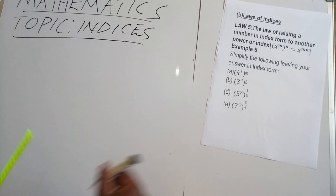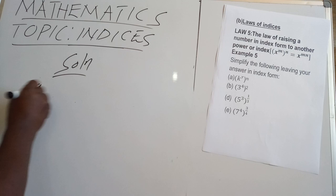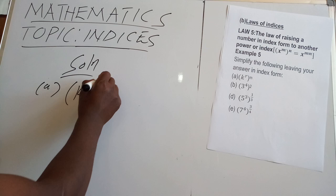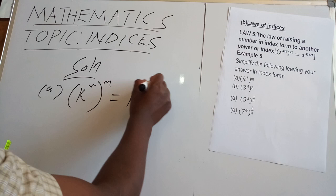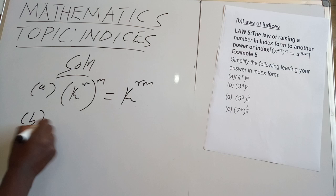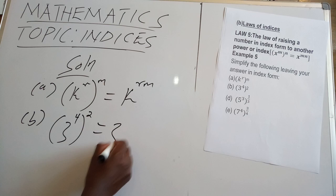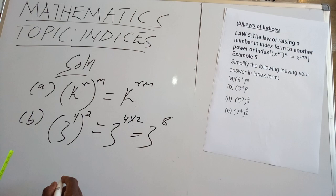Now we go to example number 5. Part A: when you have k raised to power r, then raised to power m, the outcome will be k raised to power rm — r times m. Part B: we have 3 power 4 raised to power 2. The outcome will be 3 power 4 times 2. In the end, we get 3 power 8.